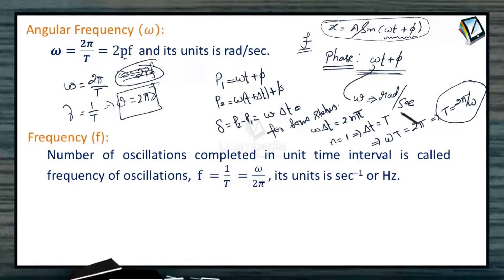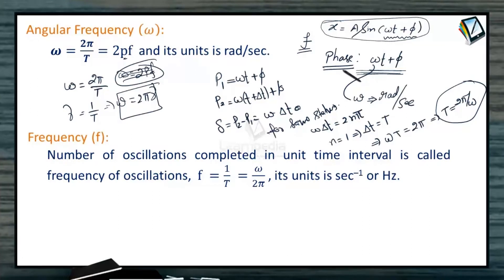To summarize: if the solution of the system is x equal to a sin(omega t plus phi), then the argument of the sine function — omega t plus phi — is known as the phase. The sine and cosine functions repeat after a phase change of 2 pi. Phase is omega t plus phi, which is a linear function of time.